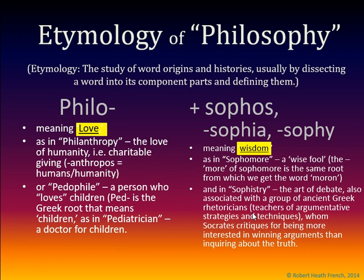The second part, sophos or Sophia, meaning wisdom, is the same root seen in the word sophomore — literally a wise fool — where the more of sophomore is the same as our English word moron. We also see it in sophistry, which refers to the art of debate and a group of ancient Greek rhetoricians or teachers of argumentative strategies. The famous philosopher Socrates critiques the sophists — literally the wise ones — for being more interested in winning arguments rather than inquiring about the truth.